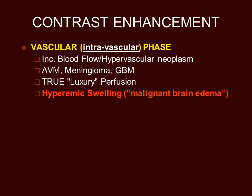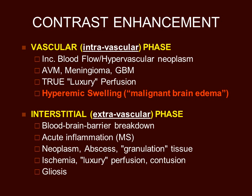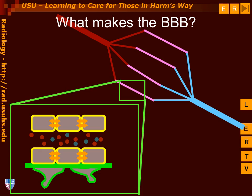So we have two different phases of contrast enhancement: the vascular phase and the interstitial or extravascular phase. And of course, some lesions enhance both because of increased vascularity as well as because of abnormal permeability. For example, most neoplasms have increased vascularity as well as having abnormal permeability.